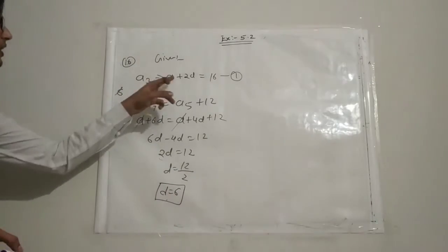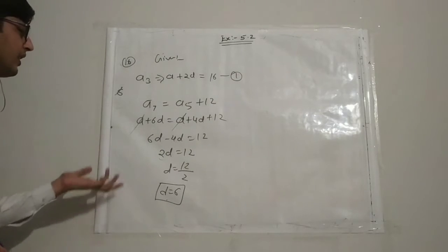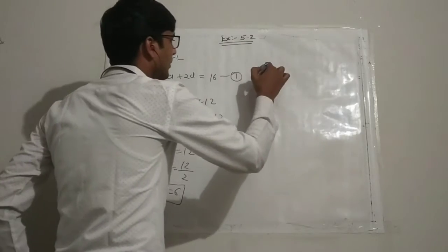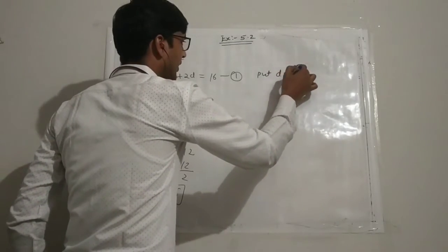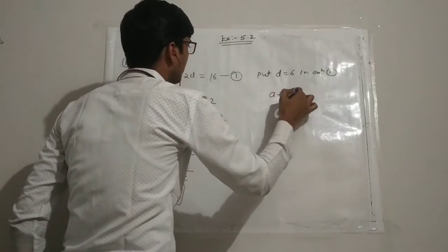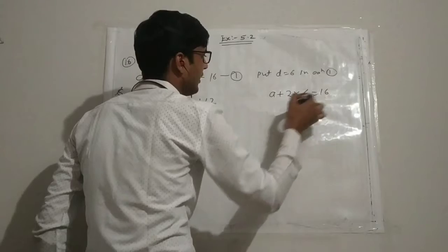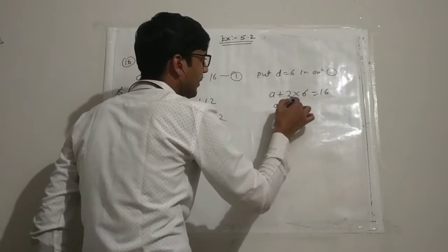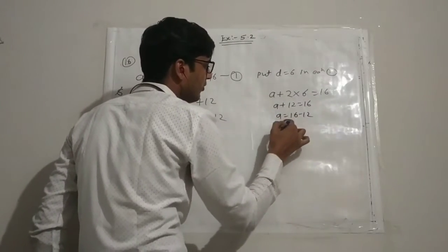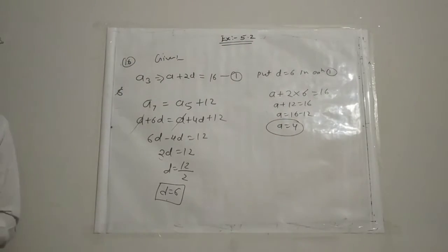Substituting d equals 6 into equation one: a plus 2 times 6 equals 16, so a plus 12 equals 16, giving a equals 4. So the first term a equals 4 and common difference d equals 6.